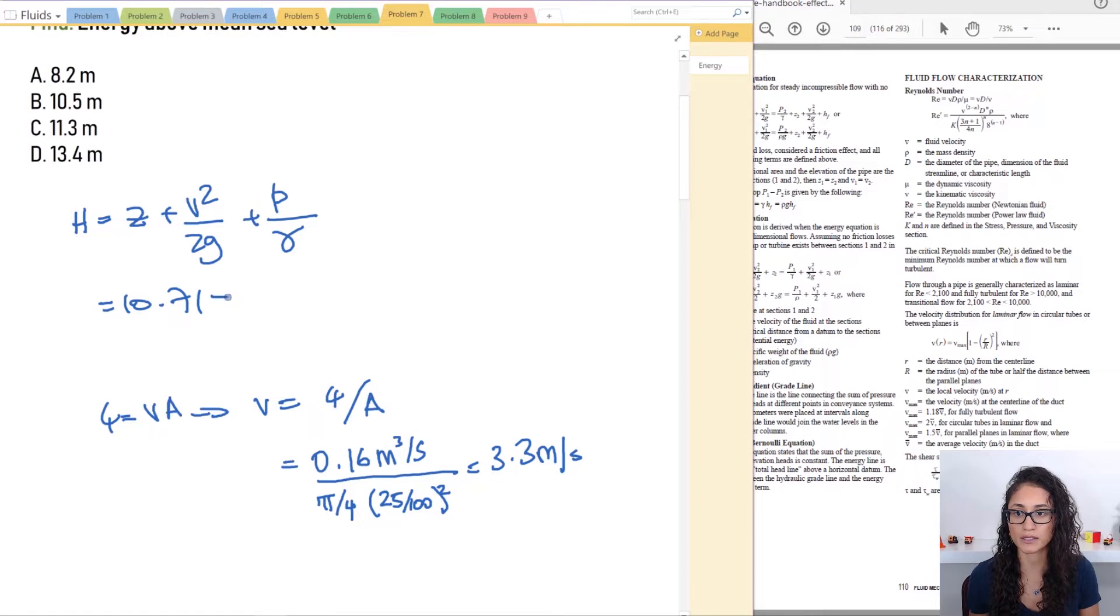Now let's go back into our equation and plug in. So I have 3.3 meters per second squared over 2 times 9.8 meters per second squared.